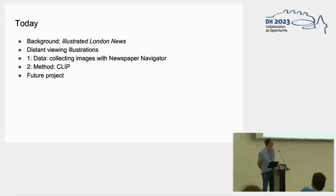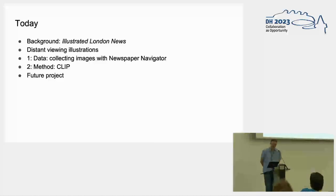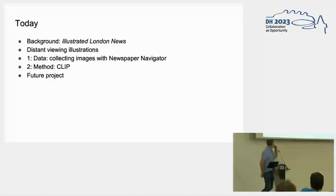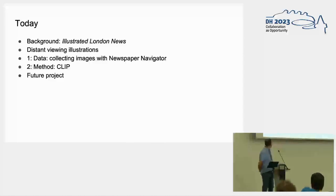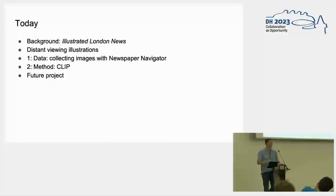I will first go into the background — the historical background — so the periodical we are studying, the Illustrated London News. Then I will go into the problem of distant viewing illustrations, not photographs but illustrations. Then I will dive into the two aspects of our project: using computer visual models to collect images from illustrated newspaper pages, and then applying the multimodal CLIP to study the illustrated world of the Illustrated London News. Finally I will say something about our future projects.